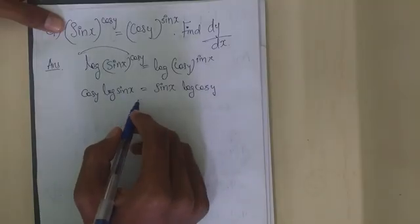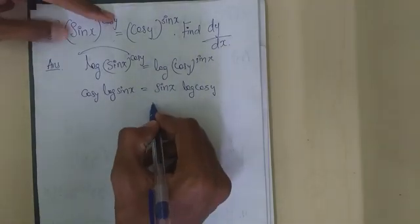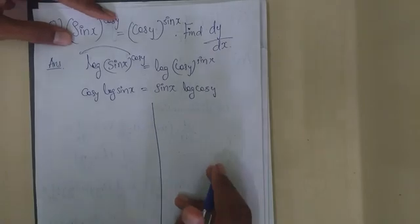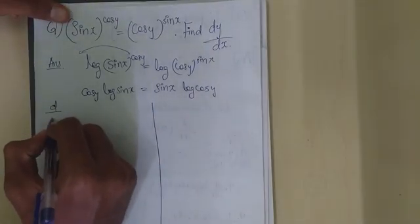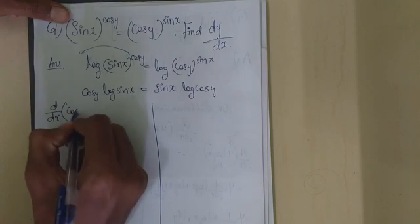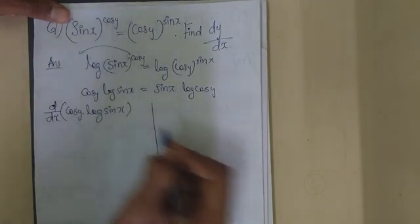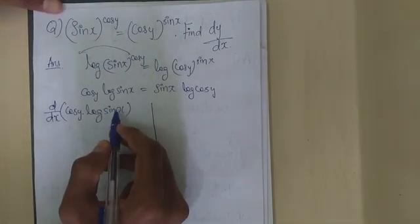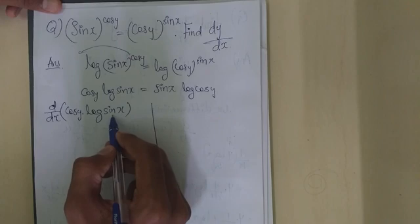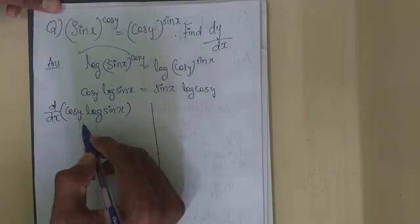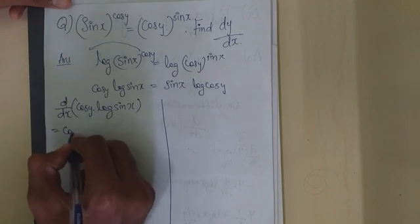Friends, now we will differentiate. We take d by dx of cos y · log sin x. We will use the UV rule: first function times derivative of second, plus second function times derivative of first.